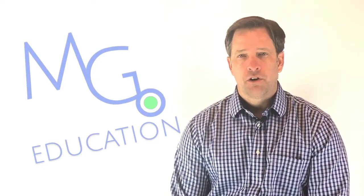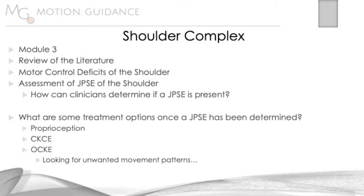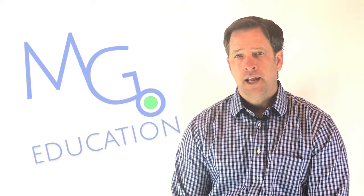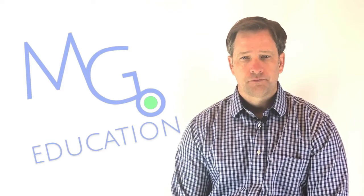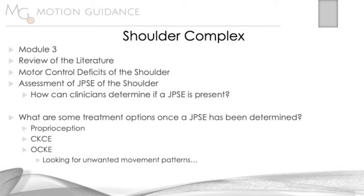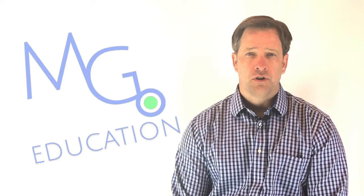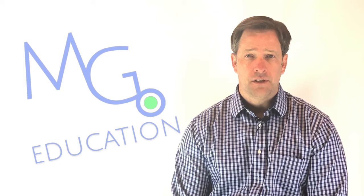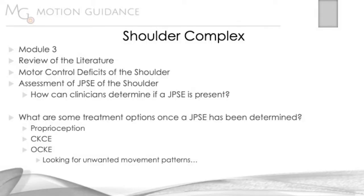Our objectives for module three are to review the literature and see what it says about joint position sense error at the shoulder regarding normals, people who are hypermobile, those that have post-trauma like dislocations, and those that present with shoulder pain. We'll then talk about assessment and how to use the Motion Guidance system to help determine if a joint position sense error is present.